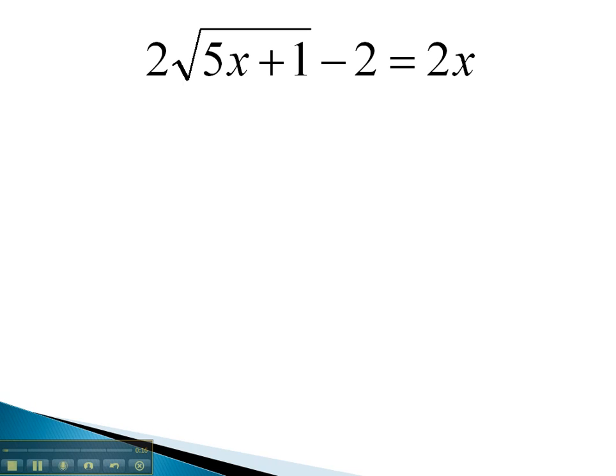Let's do that on this problem. First, to isolate the radical, we must get rid of the minus 2. We can do this by adding 2 to both sides, giving us 2 times the square root of 5x plus 1 equals 2x plus 2.